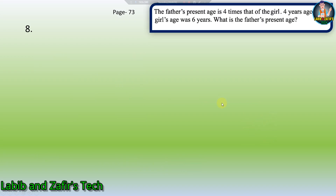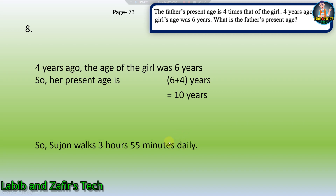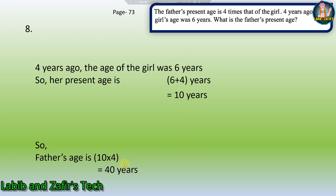Last question: the father's present age is four times that of the girl. Four years ago, the girl's age was six years. What is the father's present age? Four years ago the girl was 6, so her present age is 6 + 4 = 10 years. Father's age = 10 × 4 = 40 years. The father's present age is 40 years.